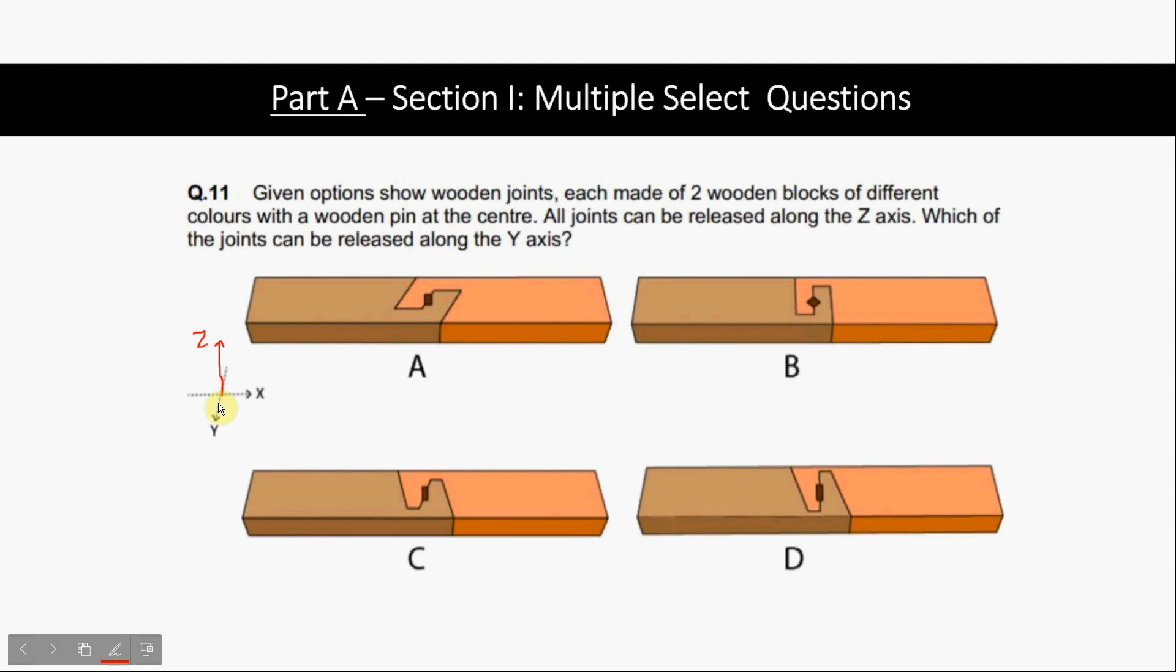Y axis is on your side. When you pull it towards yourself, the joints will come apart. So basically for this question, we need to compare this length and this length to see which one will come out.